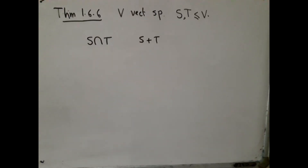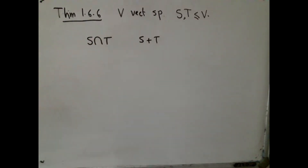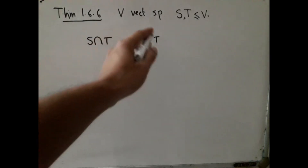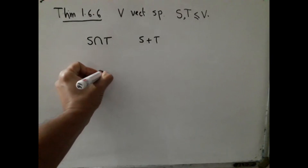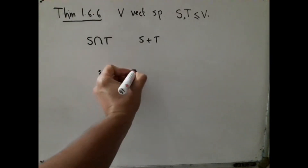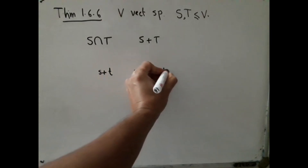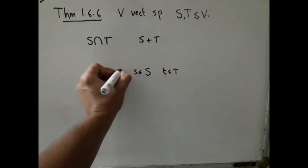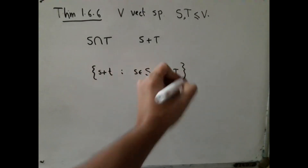Let us quickly remember what is meant by S plus T. S plus T is, as a set, all elements of V that can be written as little s plus little t, where little s belongs to capital S and little t belongs to capital T.